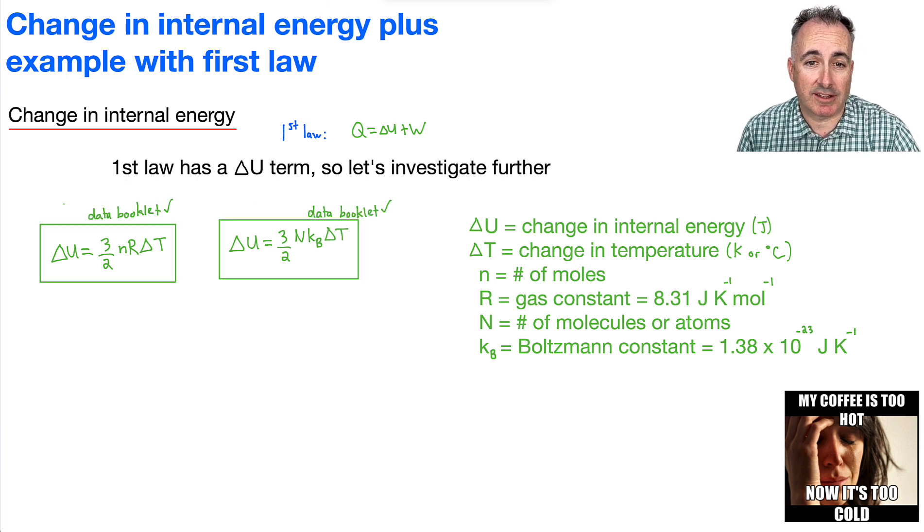Now, let's not forget what everything means. Delta U is a change in internal energy, measured in joules. Delta T is the change in temperature. If you're being really careful, you should always use Kelvin. However, because it's a change in temperature, you could technically use Celsius here. And lowercase n is the number of moles.